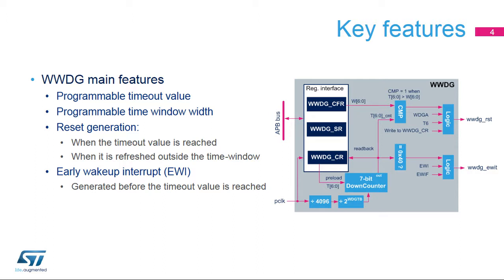It can generate an early wake-up interrupt when the down-counter reaches 0x40. This early wake-up interrupt can be used to reload the down-counter in order to avoid a reset generation, or to manage system recovery and context backup operations.